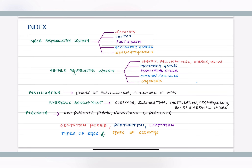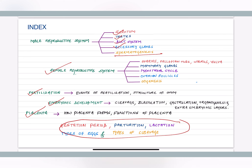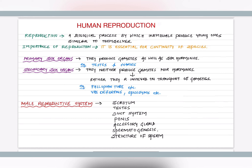We will start with the male reproductive system, covering different parts like scrotum, testis, duct system, and accessory glands along with spermatogenesis. Second, we will study the female reproductive system, followed by fertilization, embryonic development, and placenta. At the end we will cover some small topics like gestation period, parturition, lactation, etc.